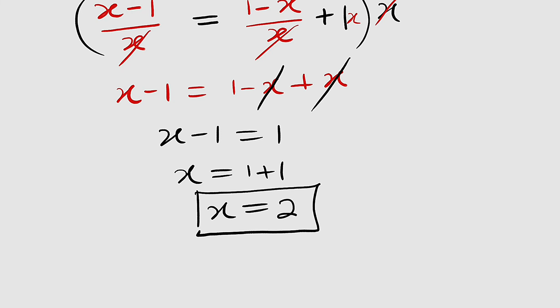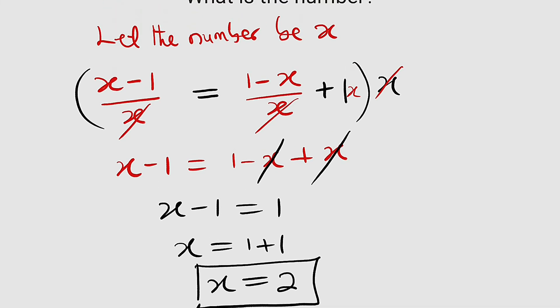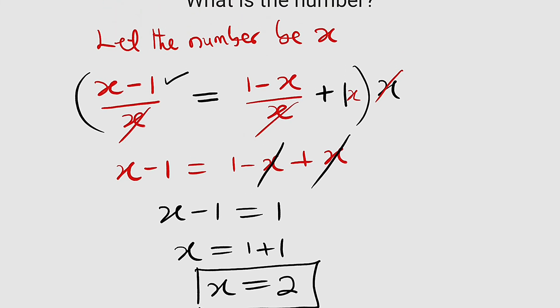But we can test it in the main equation to see whether it is true. You can see what we have here is (x - 1)/x. If x is equal to 2, we have 2 minus 1 equals 1, divided by 2 is a half. So here we have 1 over 2.